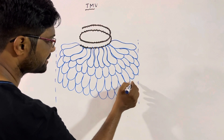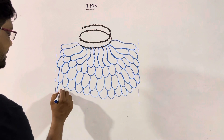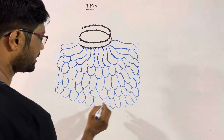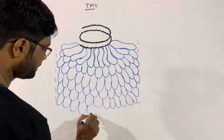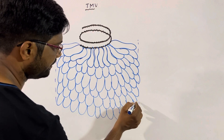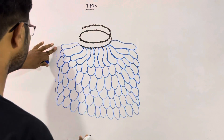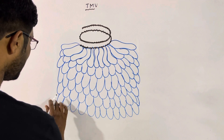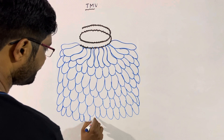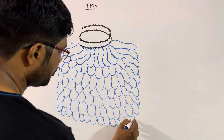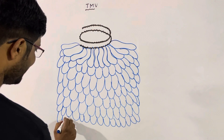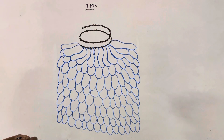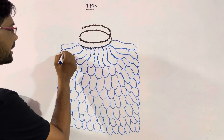If you want to draw the diagram, you will need to extend the diagram. For the TMV structure, you will need to draw the capsule arrangement. When you do it, you will form the structure. You will add HB and 2B pencils in the middle for shading.